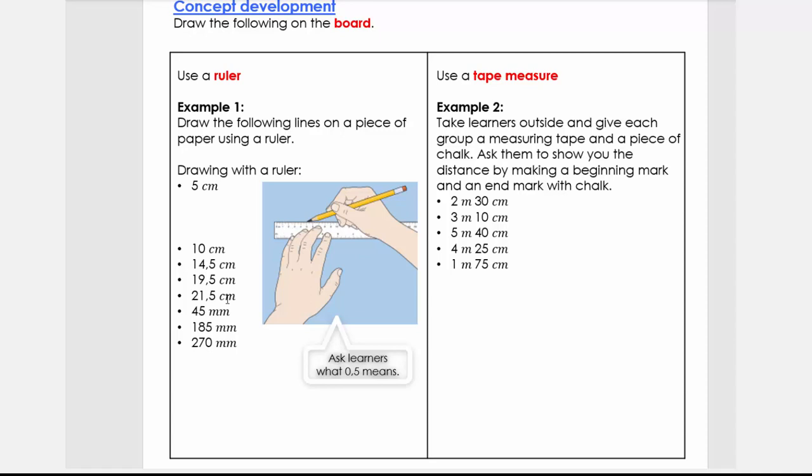Then what we're going to do is you could go outside, very nice activity. You can take some chalk with. If you don't have chalk at home, just use maybe two stones to show the start and the beginning, so from point A to point B.